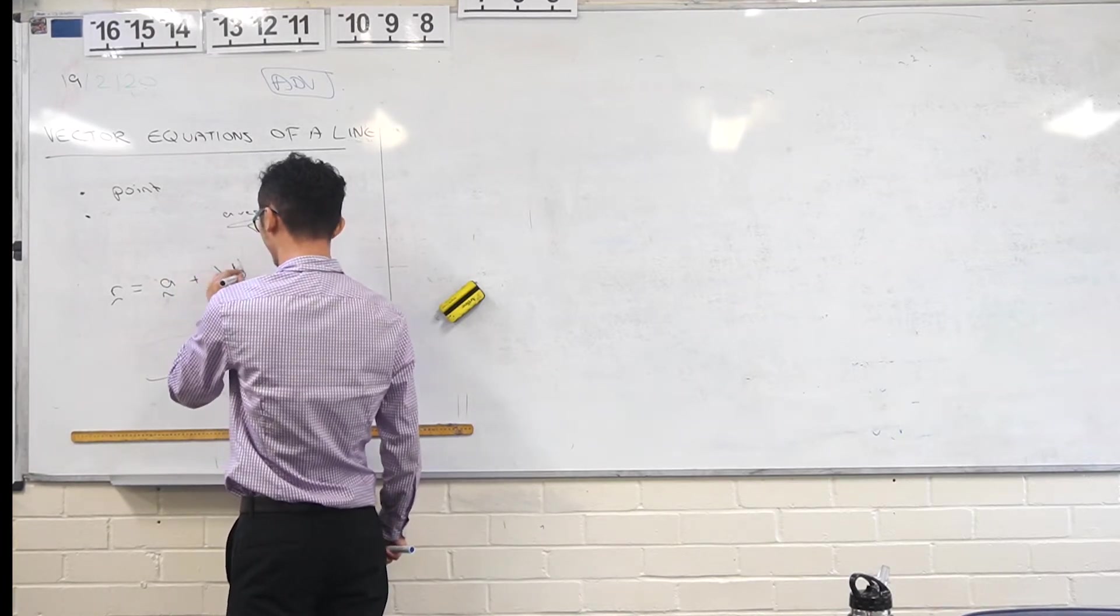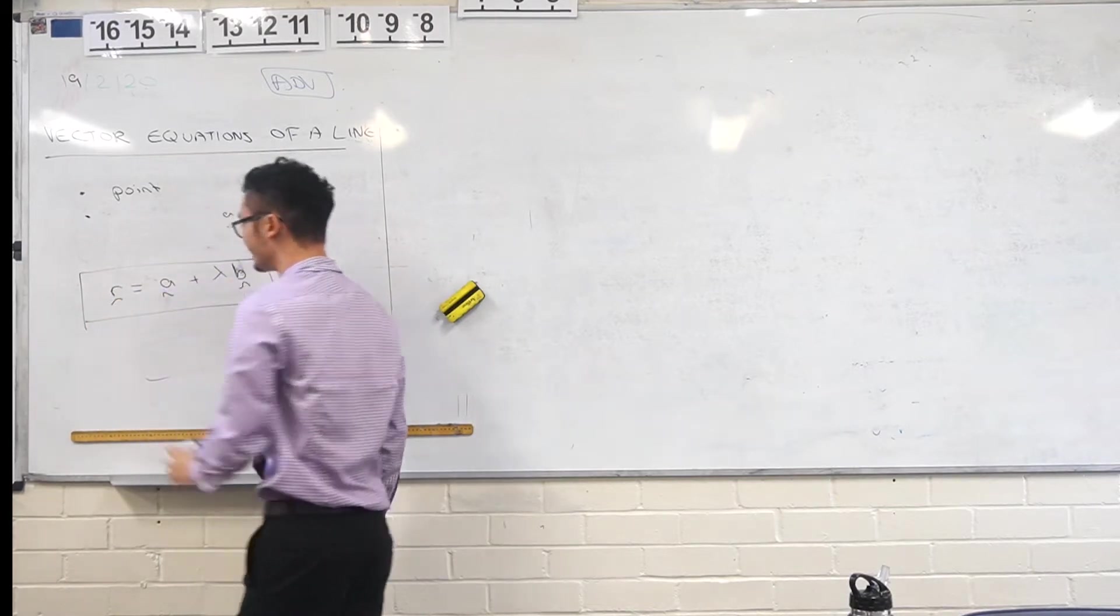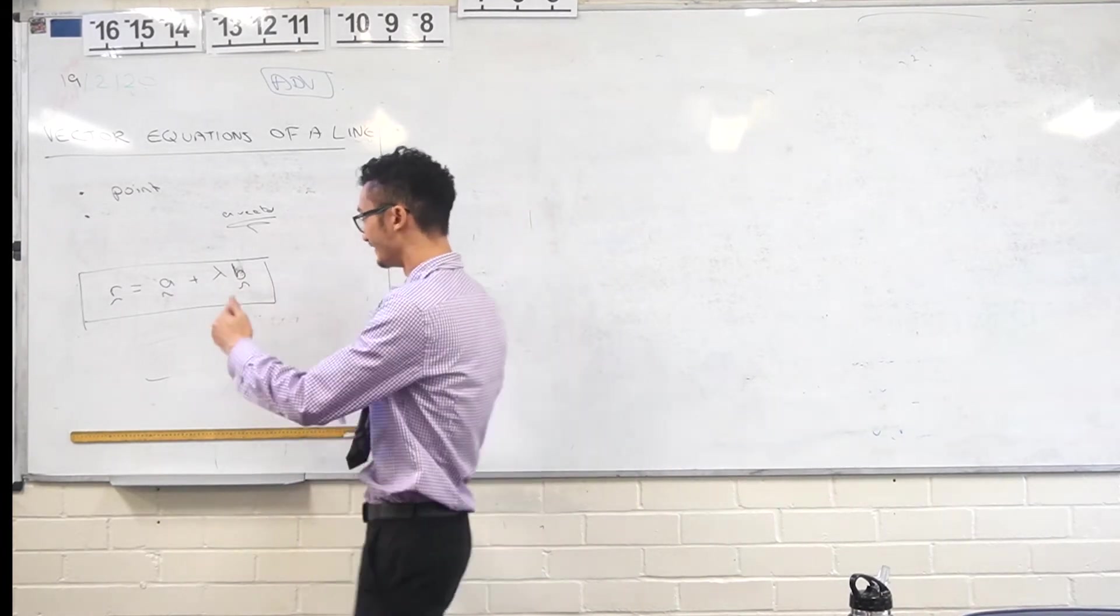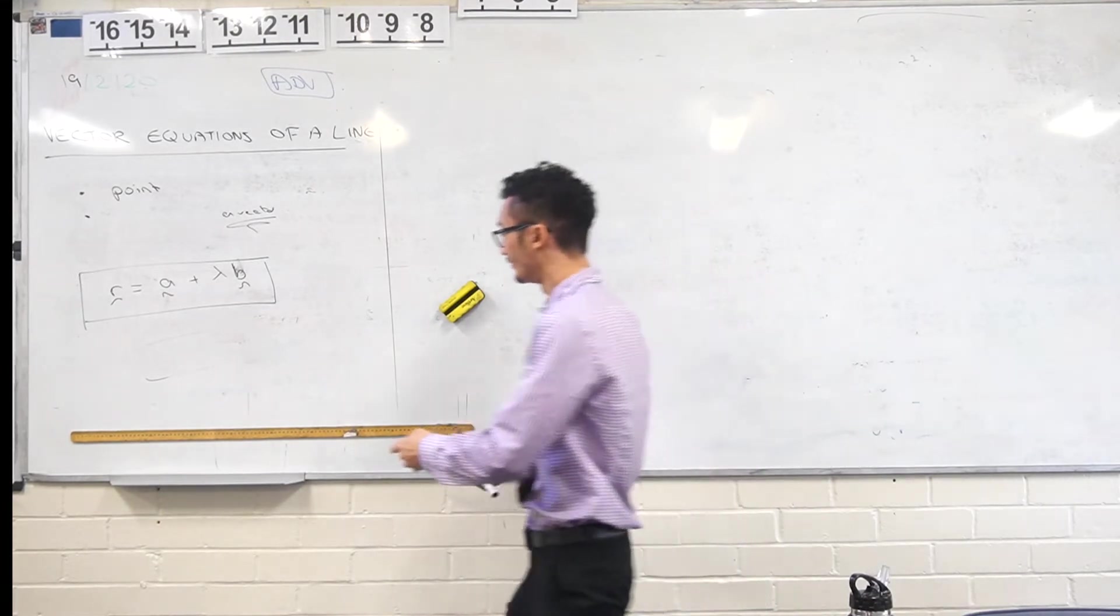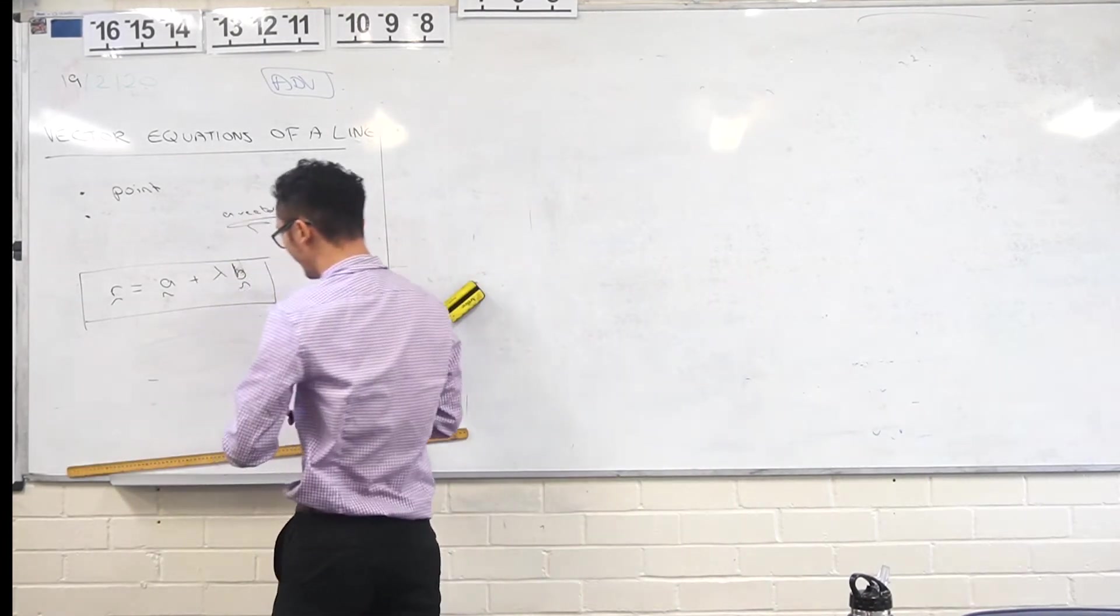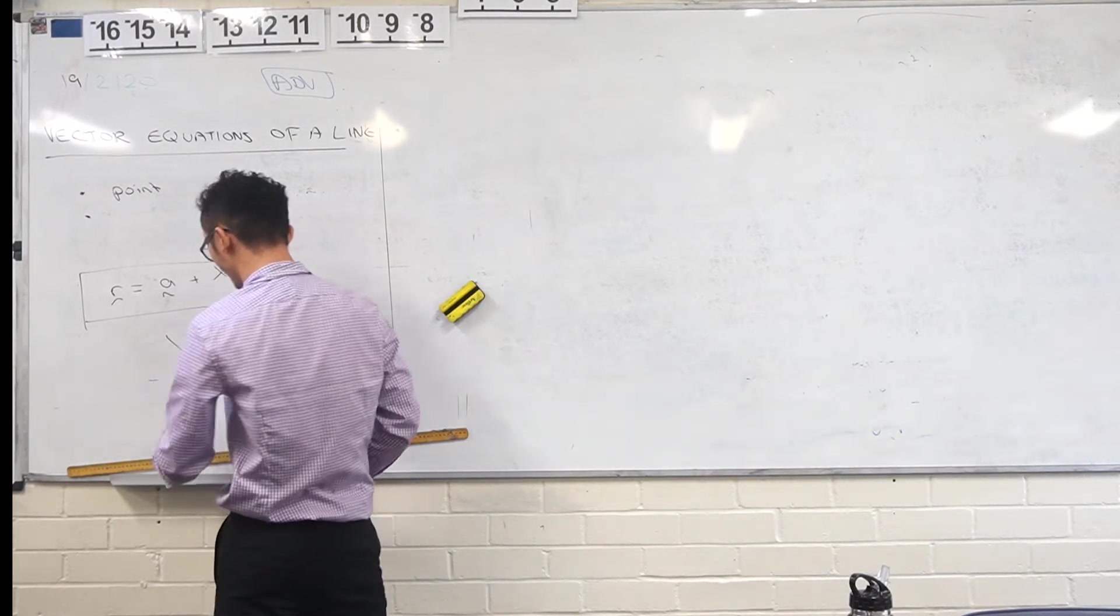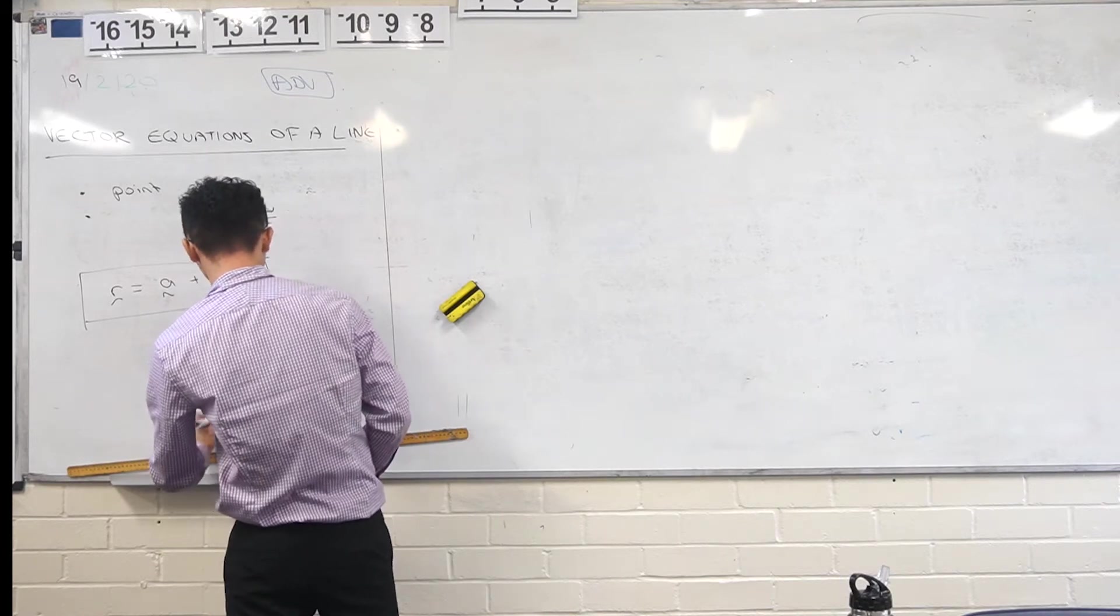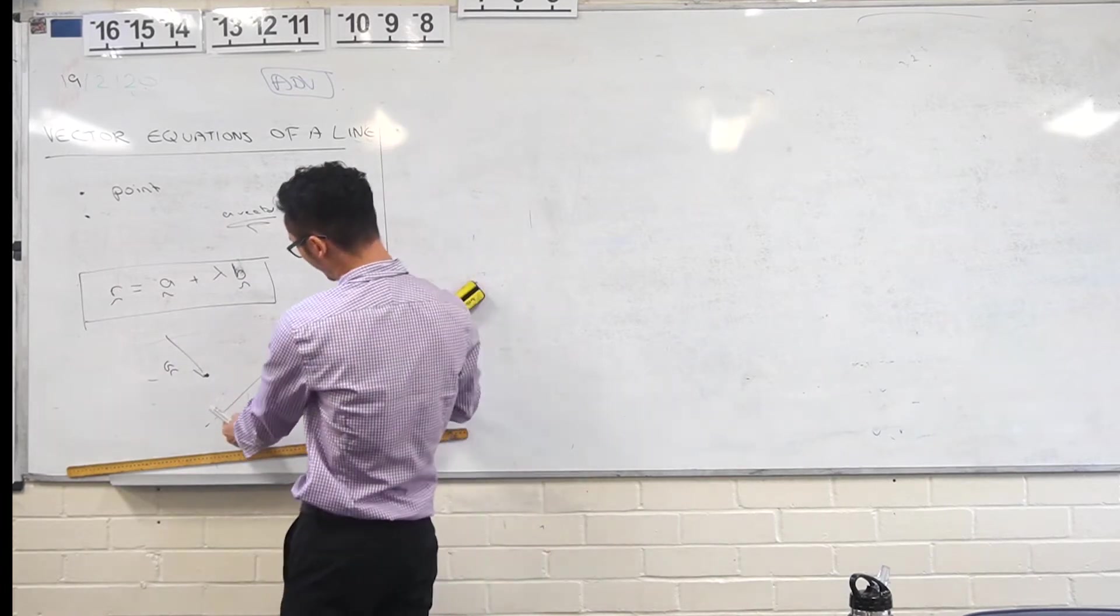Now, when we created the equation of a line, essentially what it was is, even though this is giving us a vector, if we think about all the possible values of lambda, then what we're creating is all these series of points which form our line. So if we had a point A, which is represented by this vector, it has to be going in some direction B.